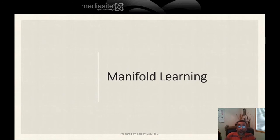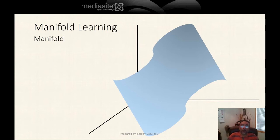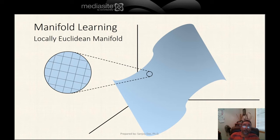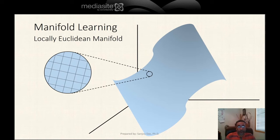Now let's go on to manifold learning. Manifold learning is simply non-linear dimension reduction. So what exactly is a manifold? Informally, given high dimensional data, a manifold is a lower dimensional curved surface lying inside the high dimensional space. A locally Euclidean manifold is one where if you zoom in, you can approximate the manifold locally with a flat surface, so you can apply the triangle inequality at very small regions of the manifold.